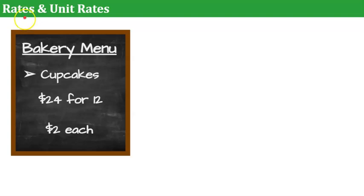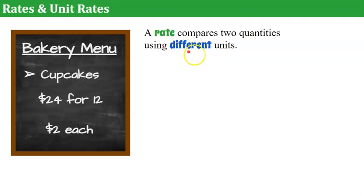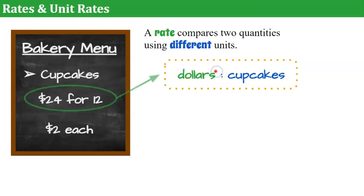We also can turn a ratio into a rate or a unit rate. It's kind of when we talk about a quadrilateral being a rectangle or a square. We can keep getting more specific. So we have a bakery menu here, which tells us the cost of cupcakes. When we're talking about a rate, a rate compares two quantities using different units. So in our previous slide, when I talked about a ratio, it was just shapes, circles and triangles. Now we're actually talking about dollars and cupcakes. So that adds a quantity or a unit to what we're talking about in our ratio. So our ratio here is a rate because it's $24 for 12 cupcakes. We're comparing the cost to what we're buying.